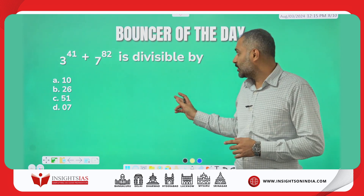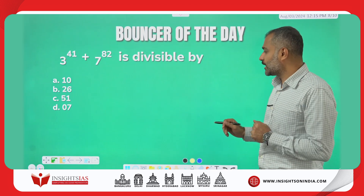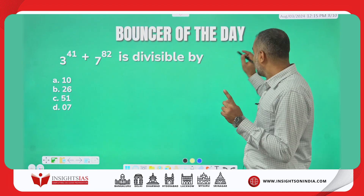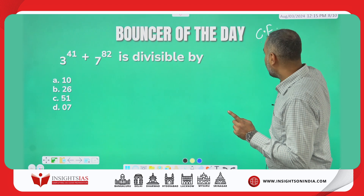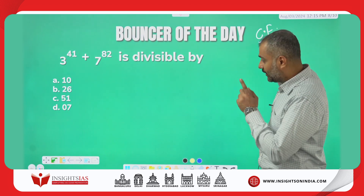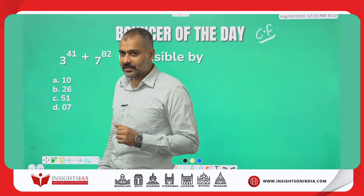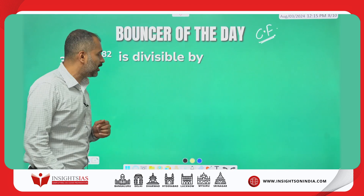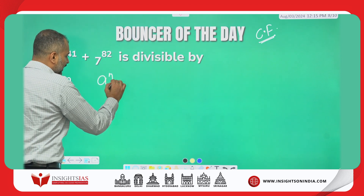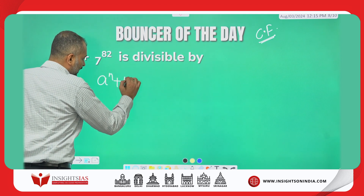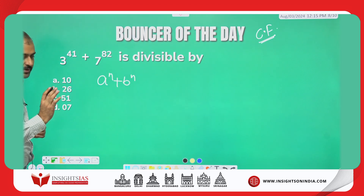This was asked as a bouncer in the last video. I am going to explain it using the common factor technique. To apply the common factor, the expression has to be in the form of a^n + b^n or a^n - b^n.